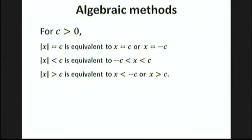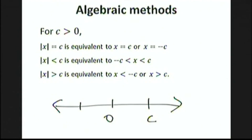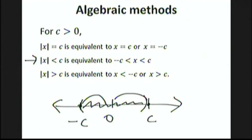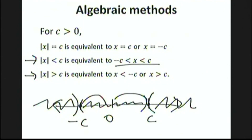We went over geometric methods for solving equations and inequalities involving absolute values. Now let's look at some algebraic methods, which are derived precisely from looking at things geometrically. The absolute value of x equals C means the distance between x and 0 is equal to C, and that happens at exactly two points: C and negative C. The absolute value of x less than C means x is between negative C and C. The absolute value of x greater than C means x is less than negative C or x is greater than C.